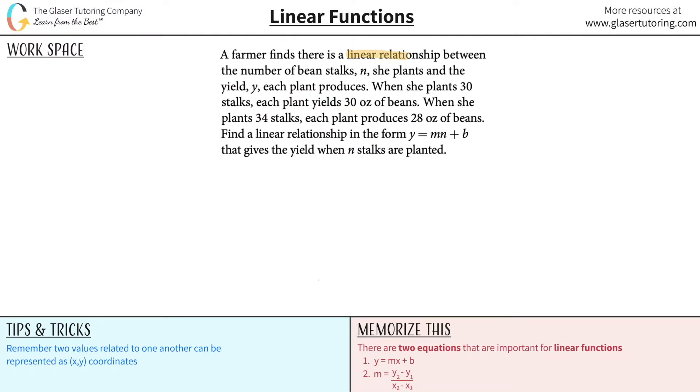A farmer finds there is a linear relationship between the number of beanstalks n she plants and the yield y each plant produces. When she plants 30 stalks, each plant yields 30 ounces of beans. When she plants 34 stalks, each plant produces 28 ounces of beans. Find a linear relationship in the form y = mx + b that gives the yield when n stalks are planted.